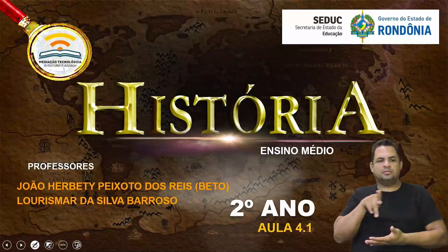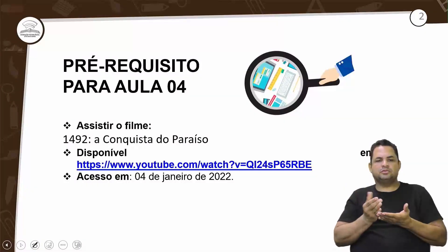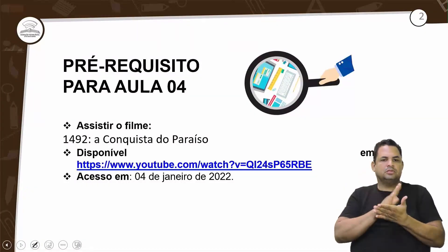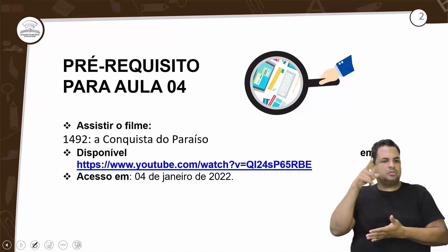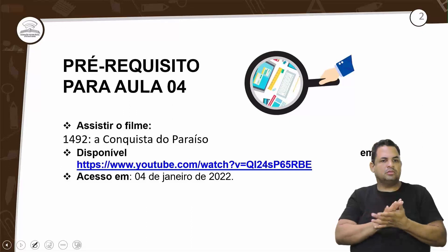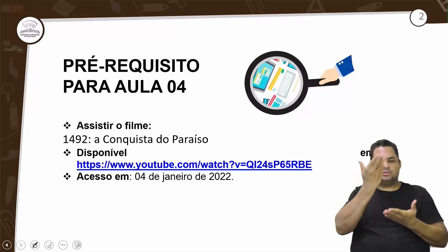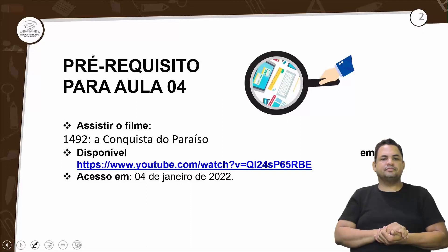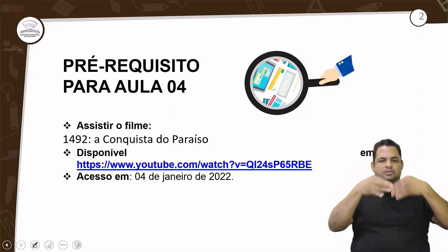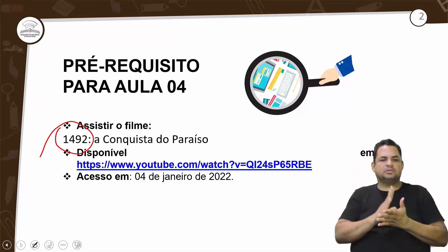O professor Beto e o Sâmio estarão com vocês nessa interpretação. Na aula anterior, foi deixada a missão de assistir ao filme '1492: A Conquista do Paraíso', que trata sobre a viagem de Cristóvão Colombo em 1492.